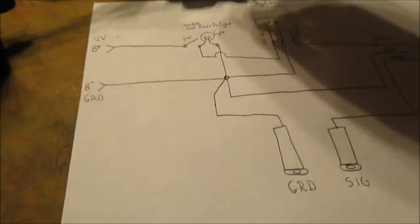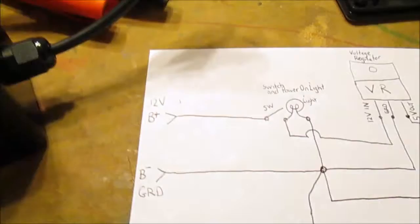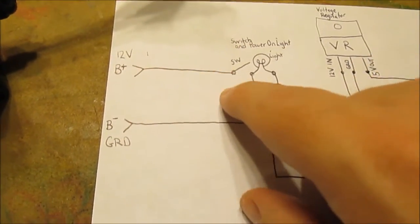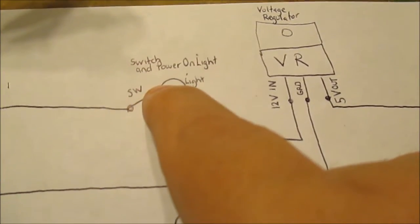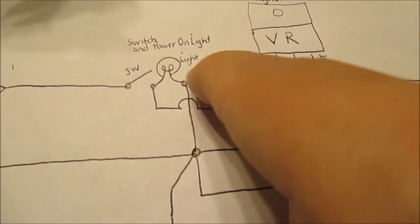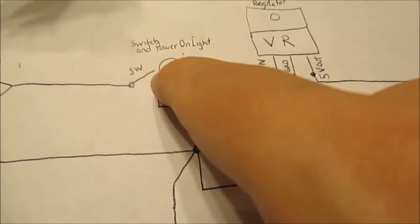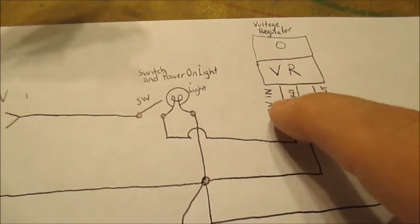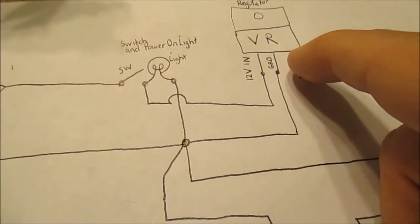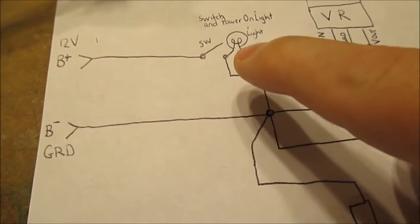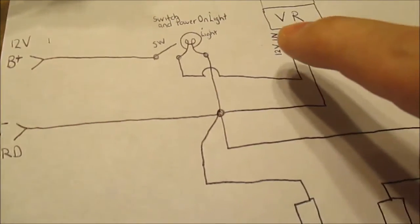Let me show you my drawing to make it make sense. Here I have a 12 volt battery positive - it comes in, here's my switch. When the switch is closed, there's a light bulb that turns on. When I close the switch it sends 12 volts to my voltage regulator, and this thing drops it down to 5 volts. I have my ground coming in - ground goes here to the light bulb and ground goes here to the voltage regulator.